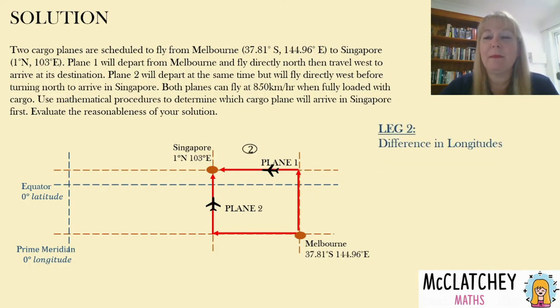Now let's work out the next part, this is our top part that the plane is flying in that westerly direction. Remember what I said before, it's going to be longer than the part from plane two. So we're going to work out those difference in the longitudes this time that it's traveling. It's 114.96 where Melbourne is, take away 103 where Singapore is, both of them are east and we've got a 41.96 degree difference.